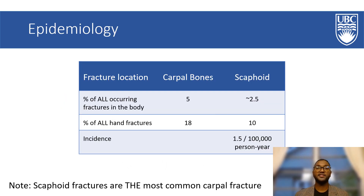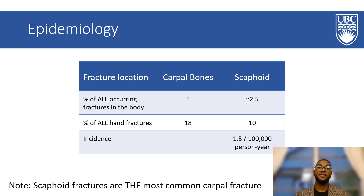The scaphoid is the most injured carpal bone. In fact, scaphoid fractures account for 10 percent of all fractures of the hand. In comparison, fractures of all other carpal bones combined only account for 8 percent of all fractures of the hand. Males are at a higher risk for scaphoid fractures than women. These fractures are unusual in the pediatric and elderly population, predominantly affecting young males. The mean age of a scaphoid fracture is 29 amongst its population.